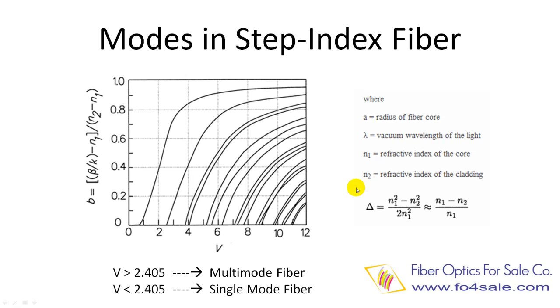V number can be changed by changing the fiber's design, such as larger core size, different core and cladding refractive index numbers, etc.